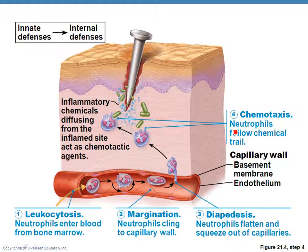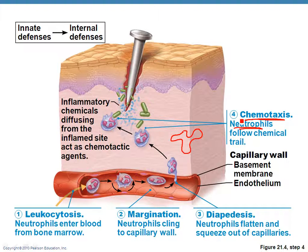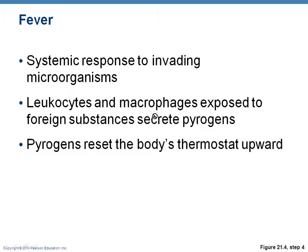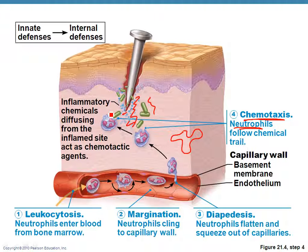How do these white blood cells — especially neutrophils and then later monocytes that become wandering macrophages — find where to go? They use chemotaxis, meaning they can sense chemicals released by damaged tissues and by the invading bacteria, and they migrate toward them. It's like a chemical trail of breadcrumbs, because those chemicals are more concentrated around areas of damage and where the microbes are located. They home in on these invading organisms through chemotaxis. Once they get there, they engulf the microbes and digest them through phagocytosis.